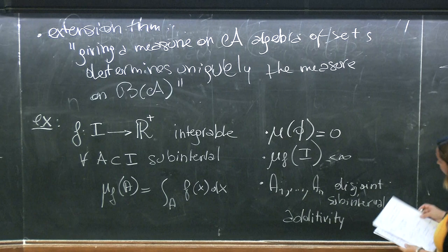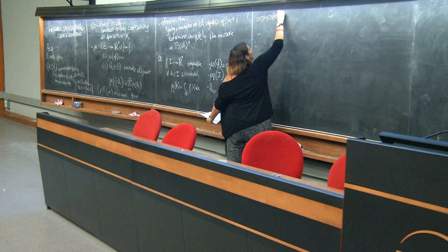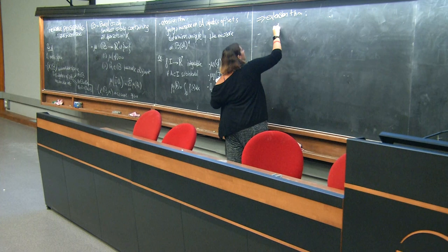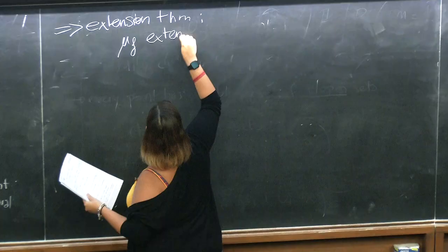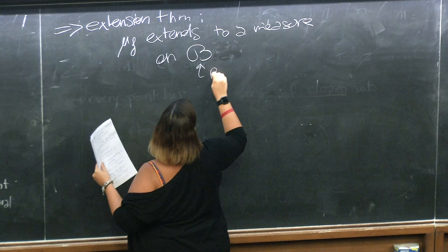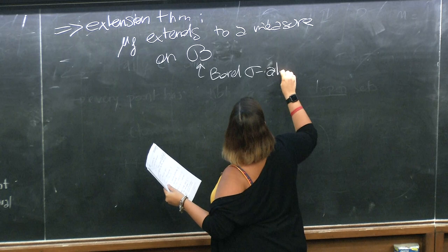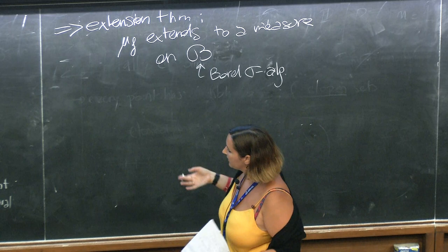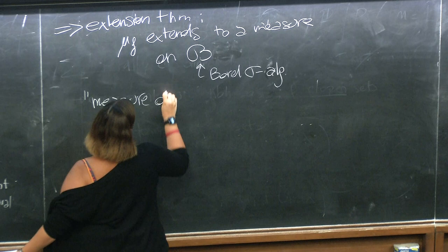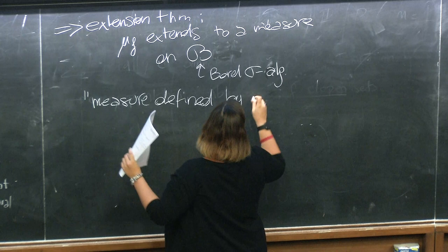Since the set of finite unions of intervals is an algebra, we can apply the extension theorem, which tells you that μ_f extends to a measure on B, the Borel sigma algebra, because the Borel sigma algebra is generated by countable unions of intervals. And this we call a measure defined by the density f.